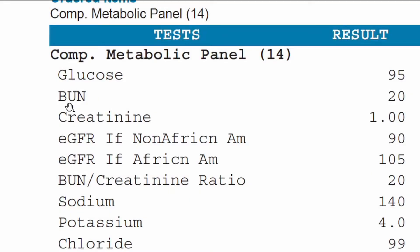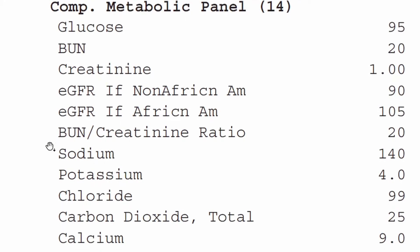Next on the list is BUN, which stands for Blood Urea Nitrogen. In your body, whenever you eat proteins, or whenever proteins in your body break down, one of the waste products is nitrogen. We can test your blood to see how much of these waste products are present, which would be an indication of whether or not your body is able to get rid of them. Your body gets rid of Blood Urea Nitrogen through the kidneys. If BUN is elevated, we could assume that there is some type of blockage in your kidneys, or maybe your body is just breaking down too much protein.